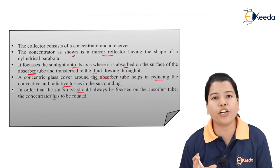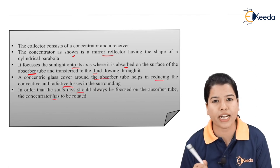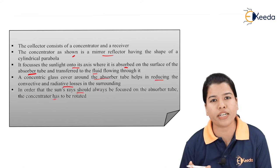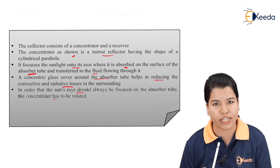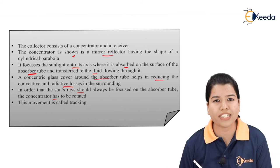As a result, in order to obtain the maximum radiation, the collectors or the concentrator should also be the rotating type. It must be able to track the solar radiation and rotate accordingly. This movement is called as tracking.